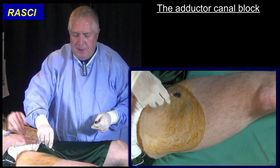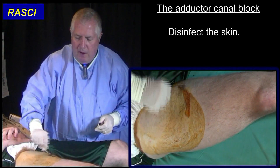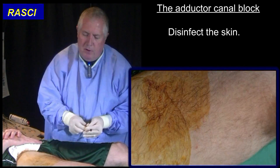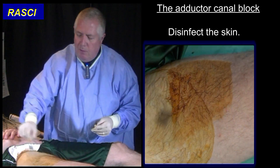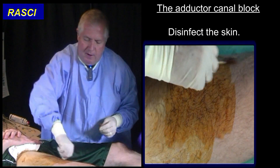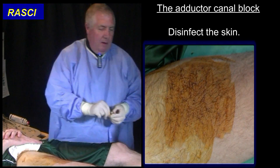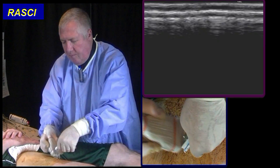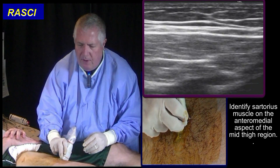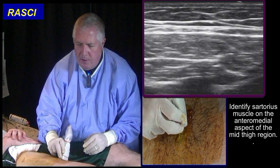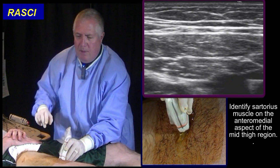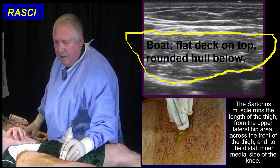For the adductor canal block we come to mid thigh. We're going to look for the sartorius muscle to identify the adductor canal. What we're looking for is our old friend sartorius, and there is this triangular muscle.